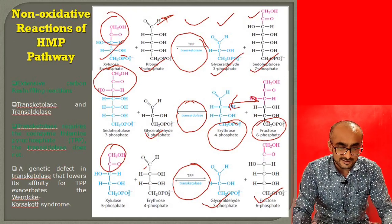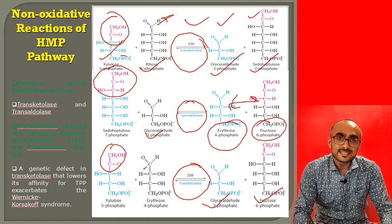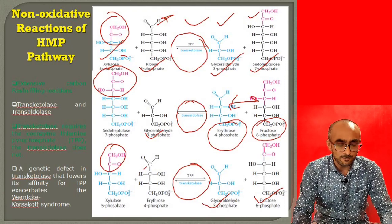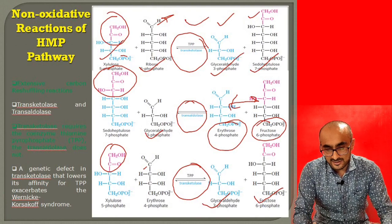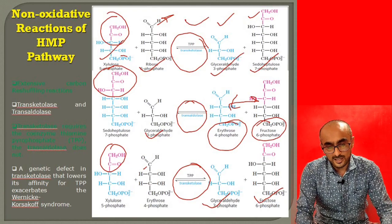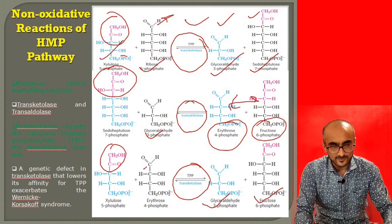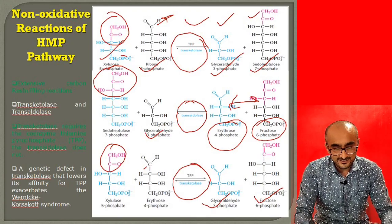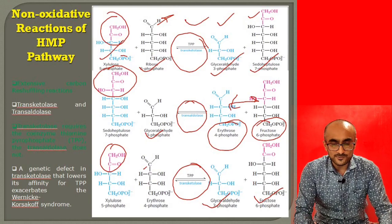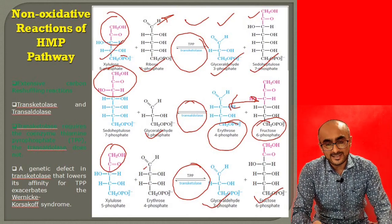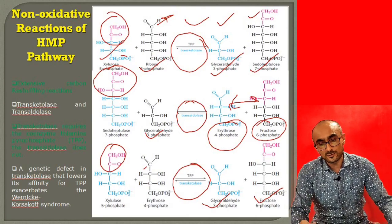Only two enzymes catalyze these non-oxidative reactions: transaldolase and transketolase. Transketolase requires thiamine pyrophosphate (TPP) as a cofactor, which is derived from vitamin B1. Transaldolase has a lysine residue in its active site that transfers the three-carbon fragment between substrates. A genetic defect in transketolase can lower its affinity for TPP, preventing the reactions from proceeding normally.